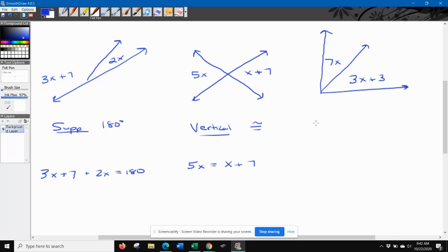Last set of angles you'll see are complementary angles. They are angles that make a 90 degree angle. So the equation we can write is 7x plus 3x plus 3 is 90.